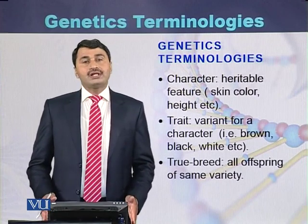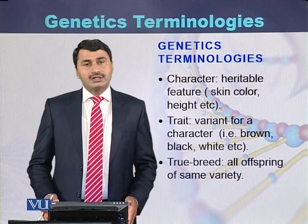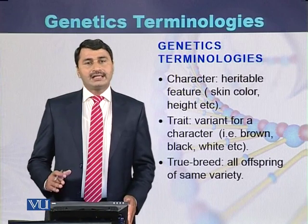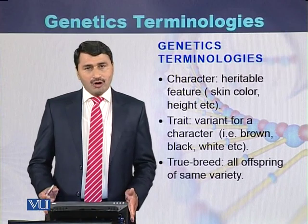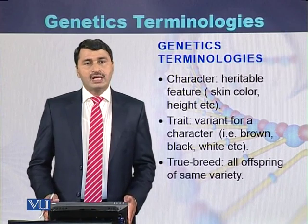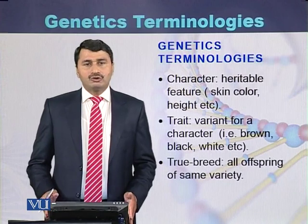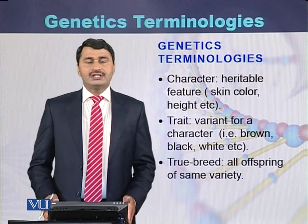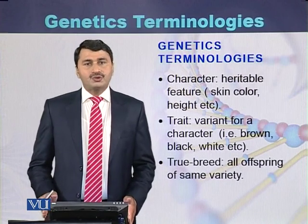What is true breed? If all the offspring produced are of the same variety — for example, tall plants will produce tall offspring and short plants will produce short plants — those varieties are called true breeds.